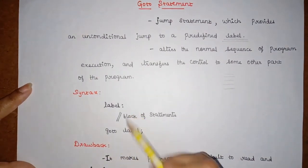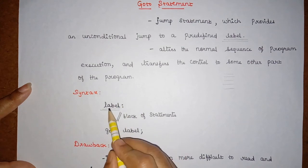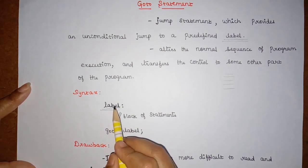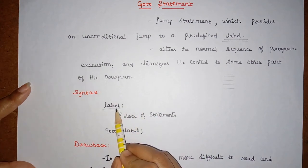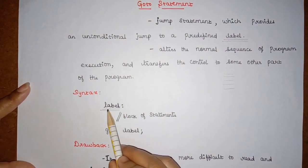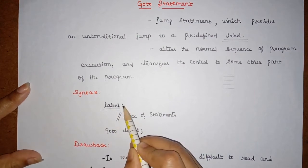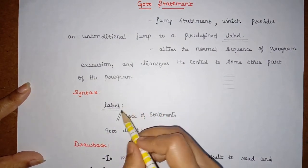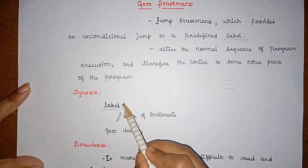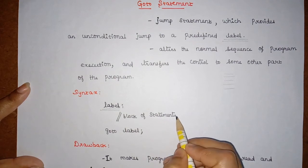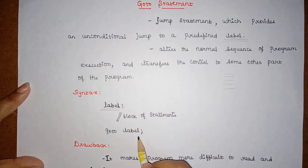Now we will see the syntax of this goto statement. As mentioned, we are using a label, and this label can be any name. The condition for the label name is that it should not be a keyword — apart from keywords, we can use any name for this label. After the label name, we have to use a colon, the same way we used colon for cases in switch. We should not use a semicolon here. Inside this label, we can have a set of statements.